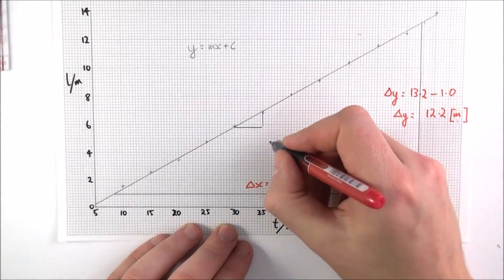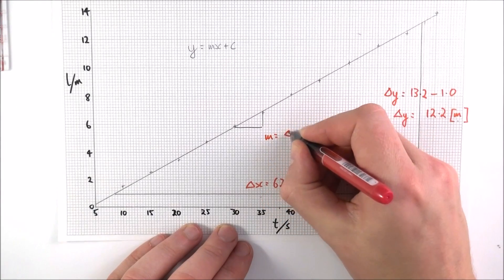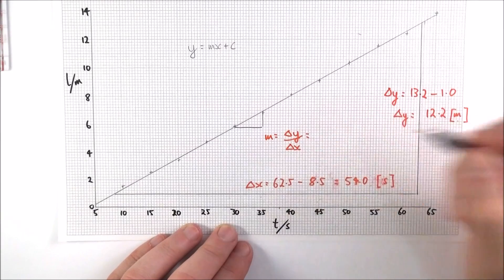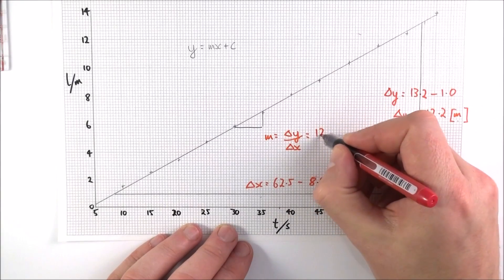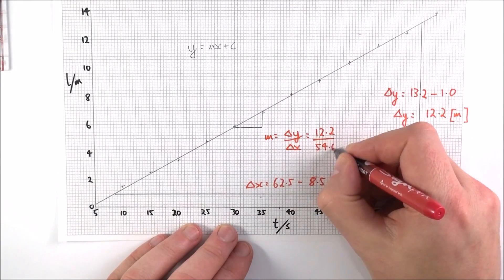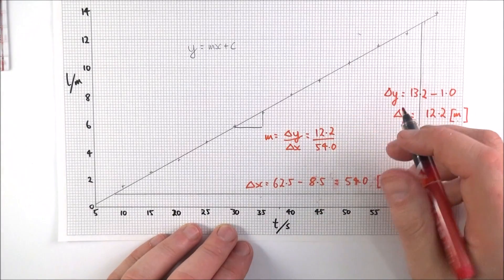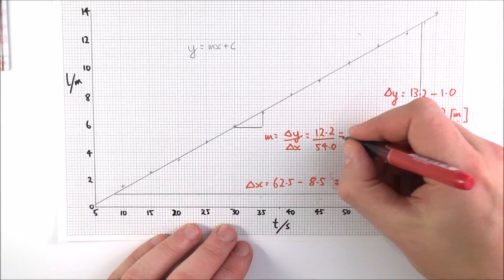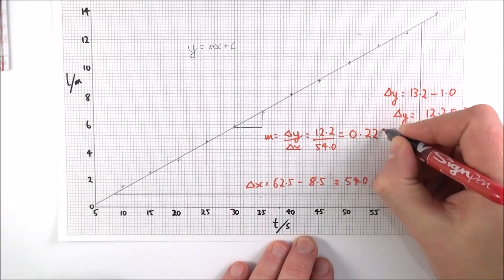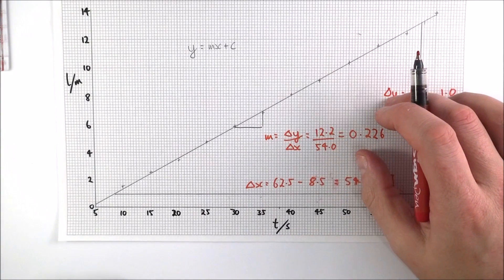In order to work out my gradient, m is equal to the change in y by the change in x. And this is just equal to 12.2 over 54.0. If I put that into my calculator, I find that the gradient is equal to a value of 0.226. So I've just left that to three significant figures at the moment.